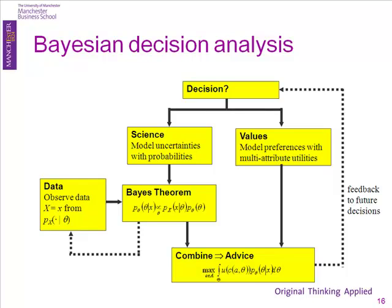For decision analysis, Bayesians separate science from values. Science is what's likely to happen — what you know about the world. Values is how much you care about it. You model the science with uncertainty and probability distributions, update it with data. The nice thing here is you get a posterior — you get some more data, that posterior becomes your prior for the next batch of data, and you just cycle on. So you can continuously and sequentially take in data.